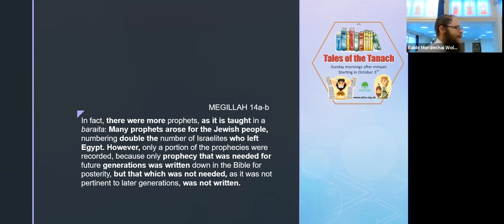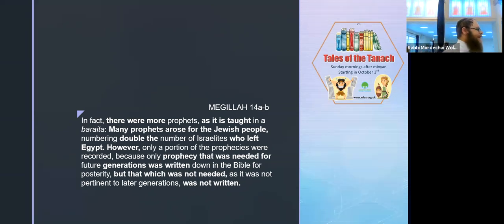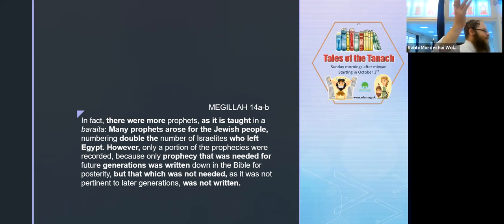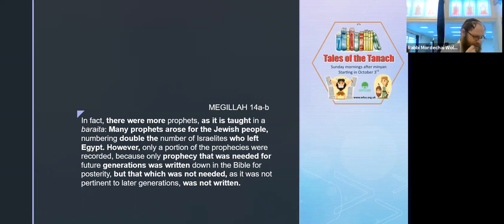That's an awful lot of prophets. However, only a portion of the prophecies were recorded because only that which was needed for future generations was written in the Bible for posterity. That which was not needed or pertinent was not written. So it seems there were actually millions of prophets - prophets on every street corner. It wasn't something unique to very special people; many people had some degree of prophecy. You only hear about the ones at the top, like football players or doctors - you only ever hear about the guys who made it.